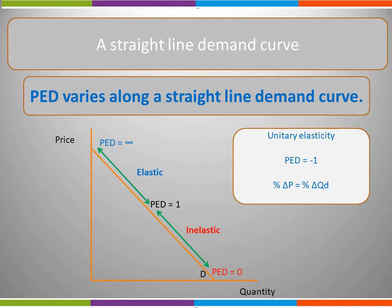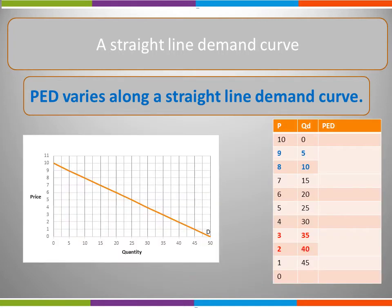We can show this using a numerical example. If we look at our graph on the y-axis — price — the numbers are actual numbers, so a change from nine to eight is a change of one. If we move towards the bottom of our axes, a change from three to two is also a change of one. But for PED we are not interested in the actual change, we are interested in the percentage change. One as a percentage of nine will be much smaller than one as a percentage of three. We can actually calculate the PED at any point along the demand curve.